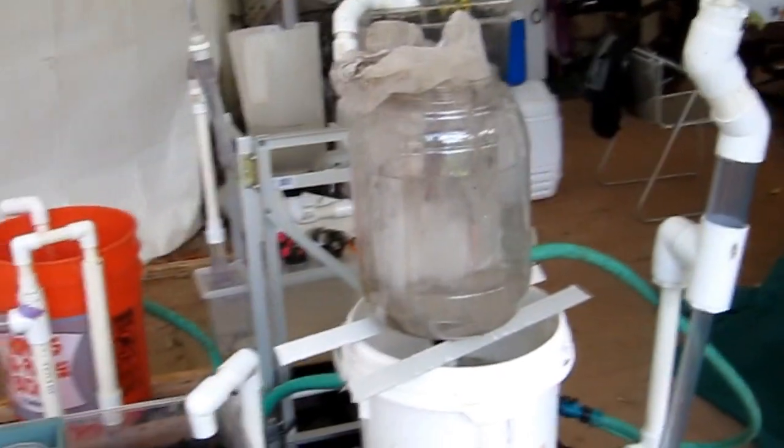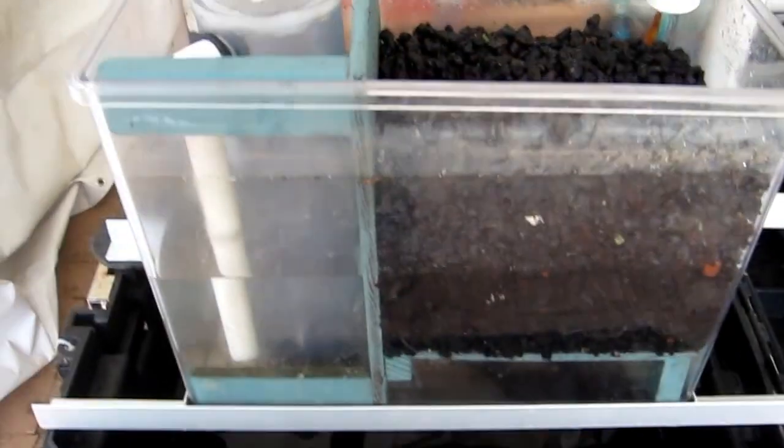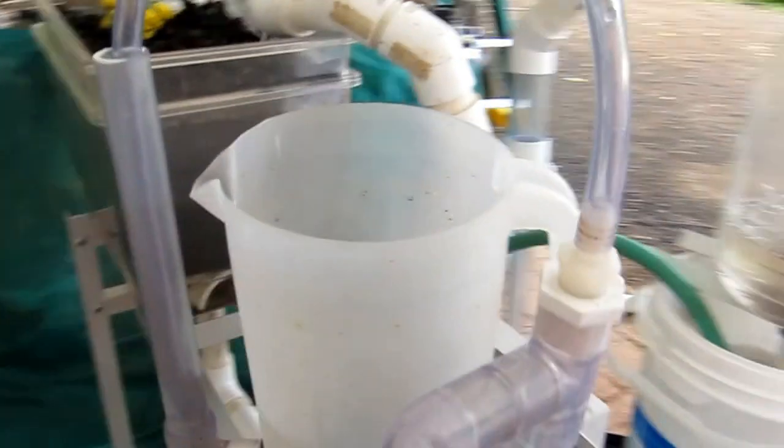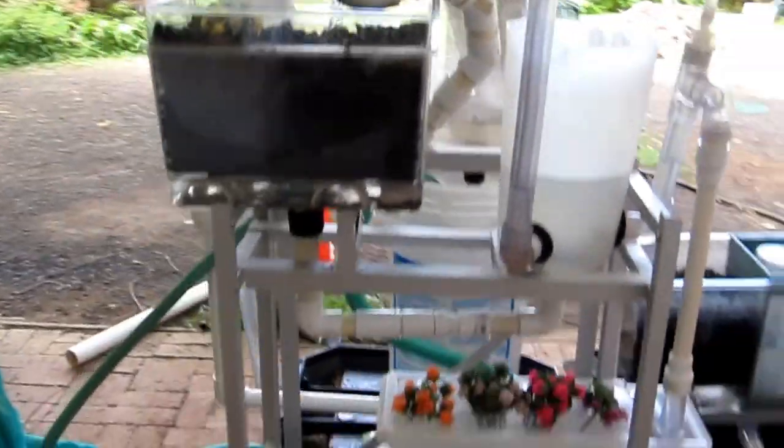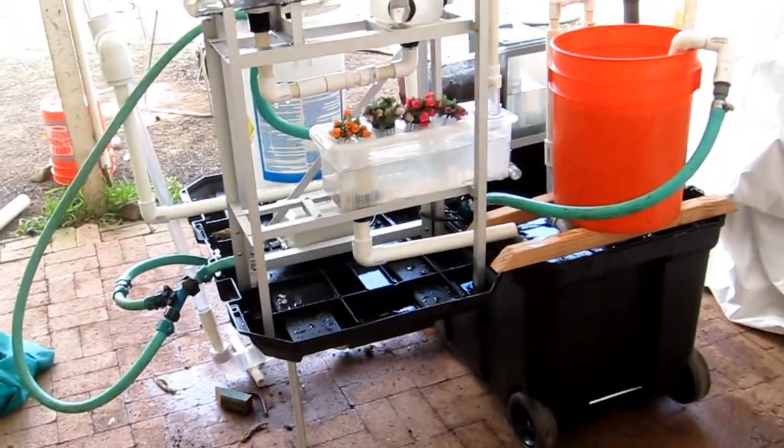So to recap, you got a tea maker. You got an ebb and flow bell siphon. You have an external bucket siphon that can be used also as a tea maker. And you have your aquarium set up here. All of this in one black case, and it all goes together and goes on the airplane with us. Enjoy.